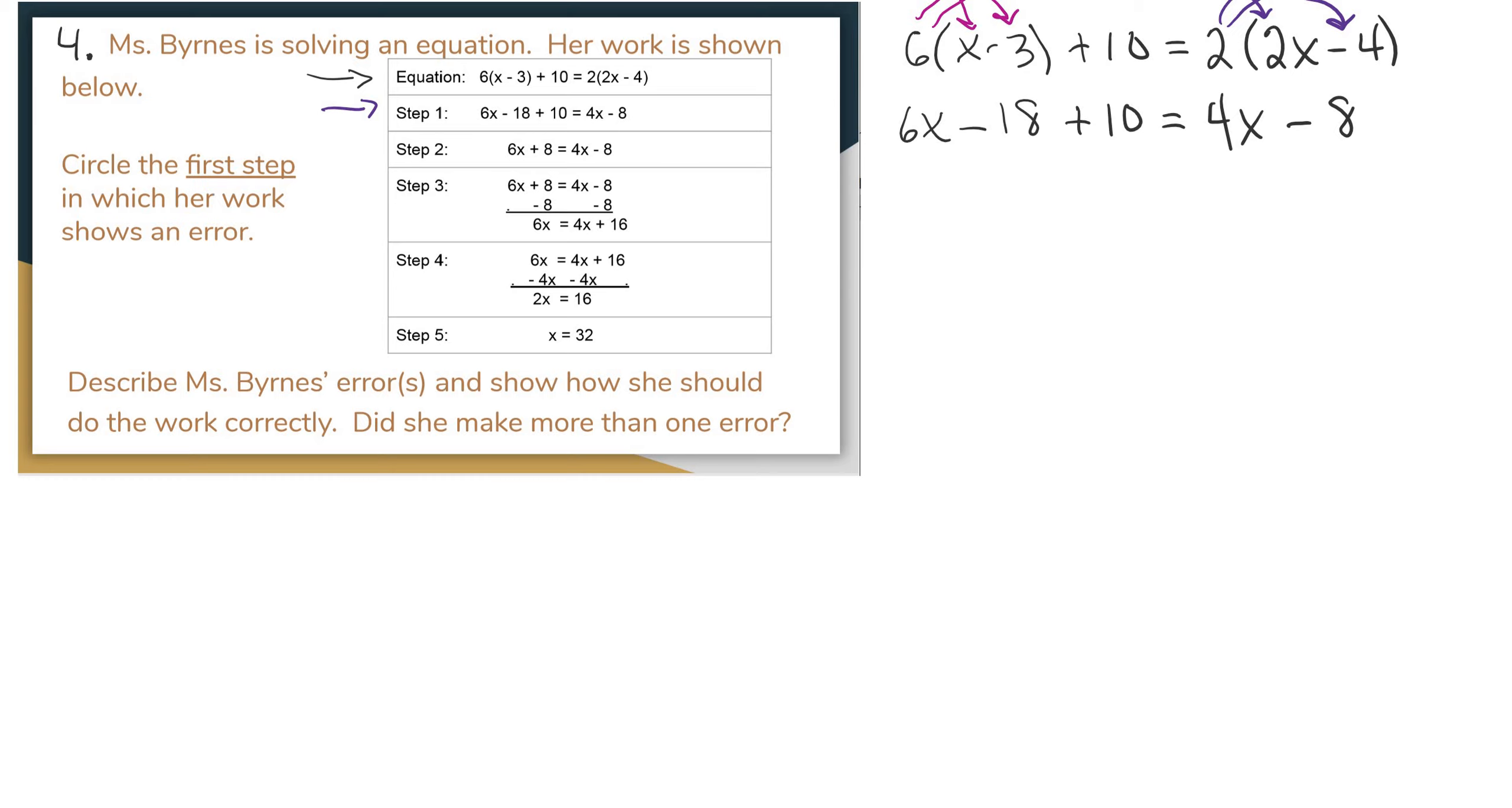So now I'm going to, it looks like they simplified, they combined like terms. So I'm going to put together, I'm going to combine this negative 18 and the positive 10. So together, they're on the same side. One's negative, one's positive, so I'm going to subtract. 18 minus 10 is 8. And there's more negatives, so this is 6x minus 8 is equal to 4x minus 8.